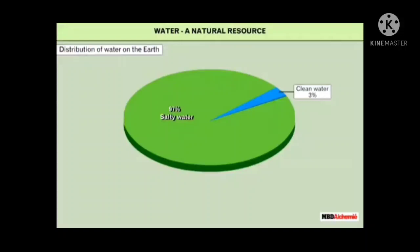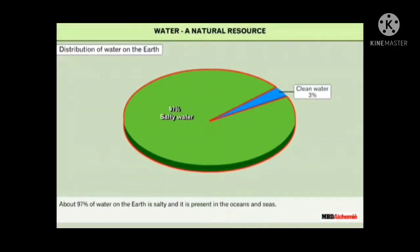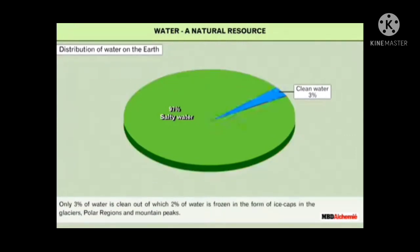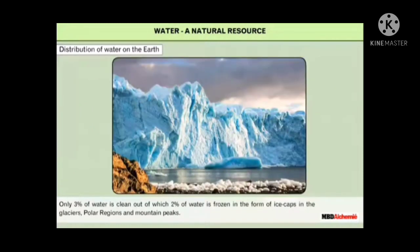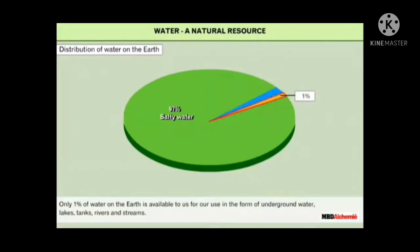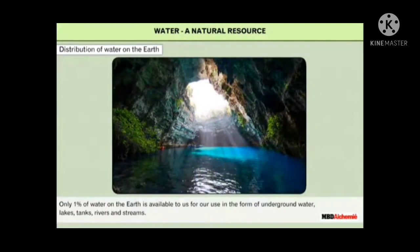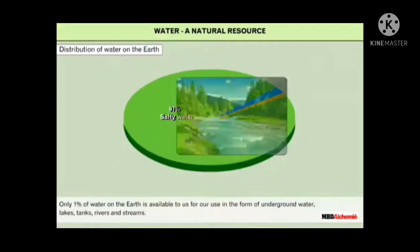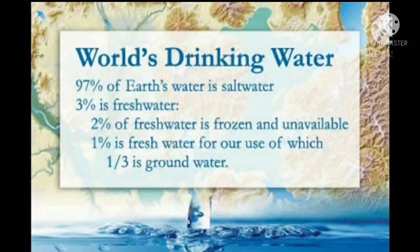Now let's see how much water is available on our planet earth. About 97% of water on the earth is salty and is present in the oceans and seas. Only 3% of water is clean, out of which 2% is frozen in the form of ice caps in glaciers, polar regions, and mountain peaks. Only 1% of water on the earth is available for our use in the form of underground water, lakes, tanks, rivers, and streams. In summary: 97% is salt water, 3% is fresh water, 2% of that fresh water is frozen and unavailable, 1% is fresh water available for use, and out of this 1%, one-third is groundwater.